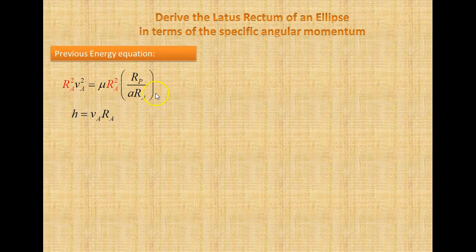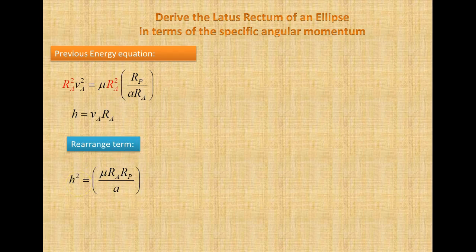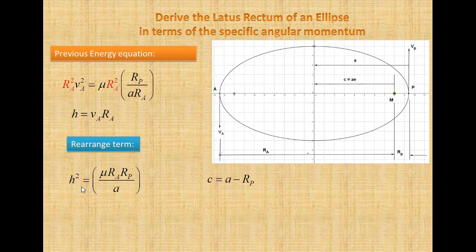Ra squared times VA squared equals H squared, by squaring both sides. So H squared equals mu times Ra times Rp divided by A. We cancel one Ra, and so the specific angular momentum squared equals mu times Ra times Rp divided by A.